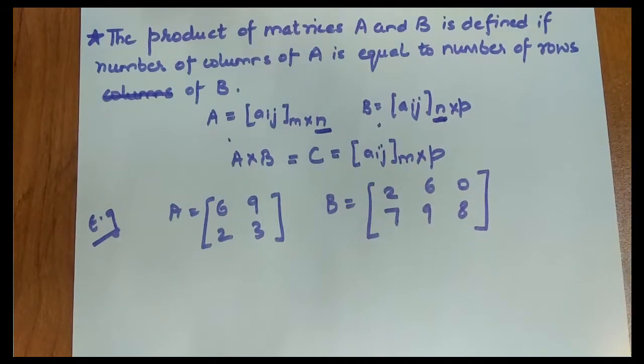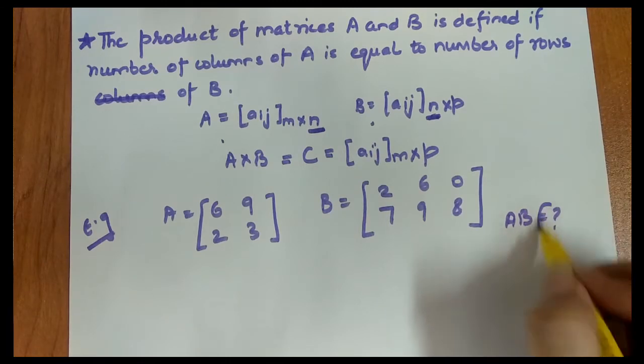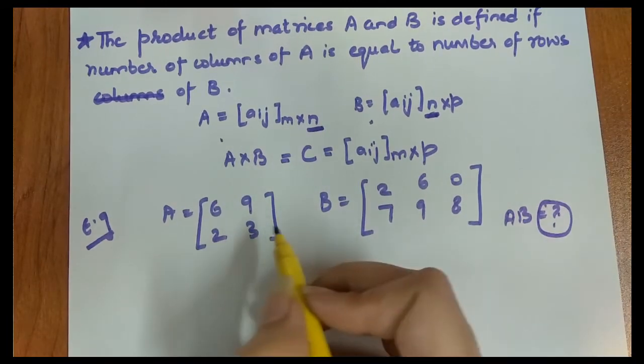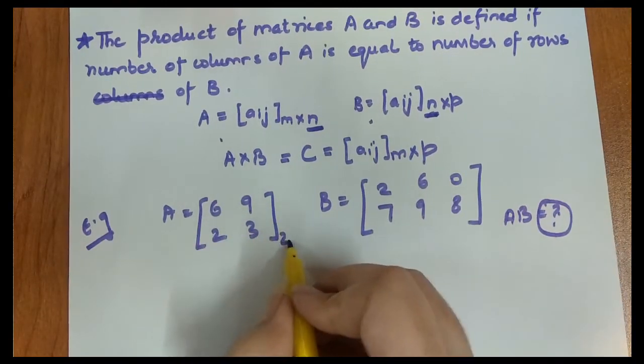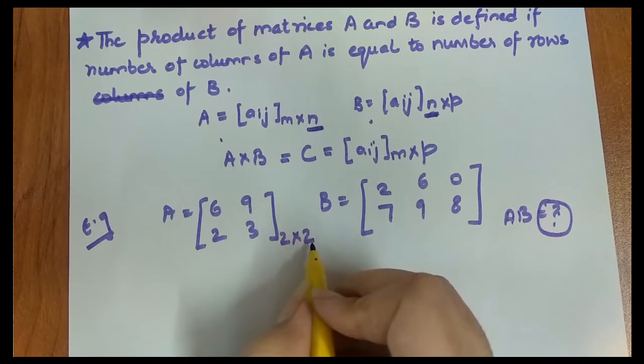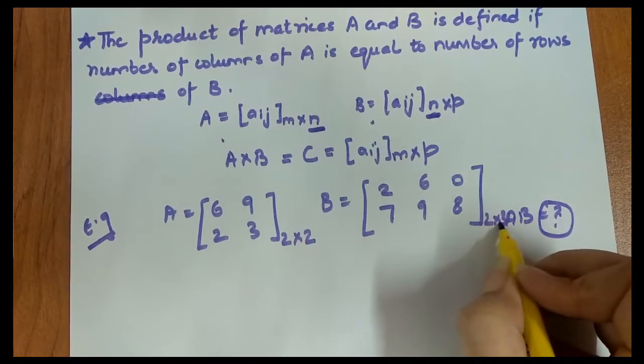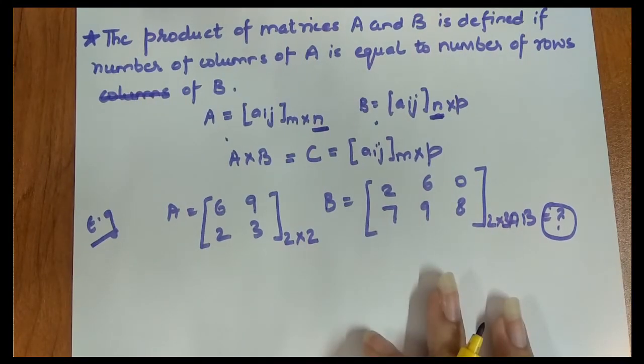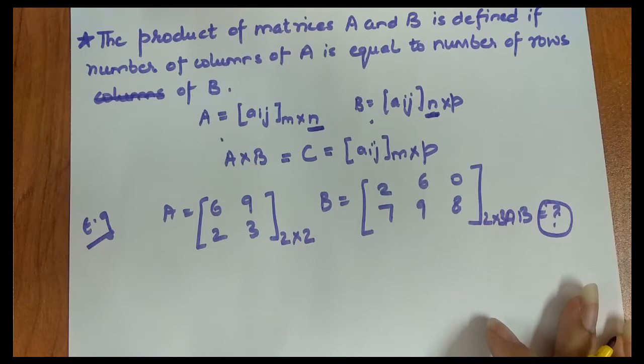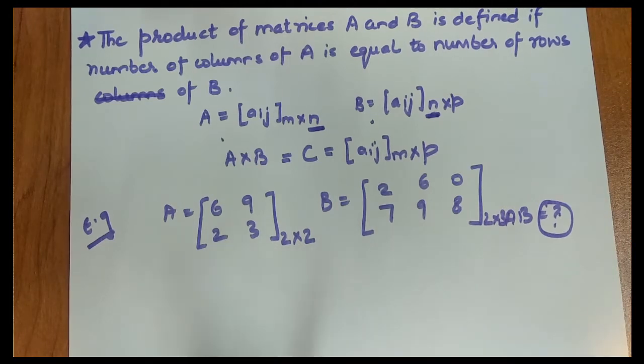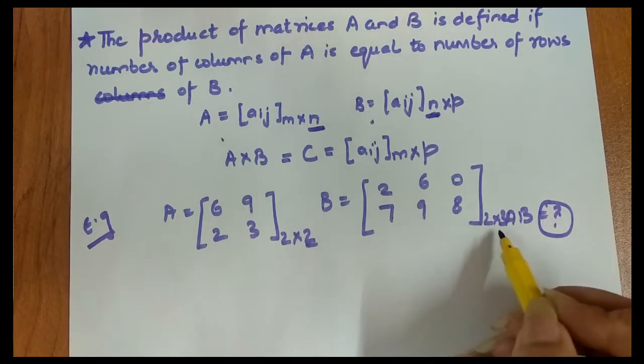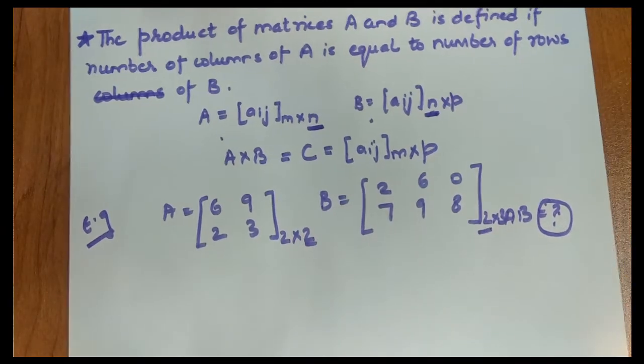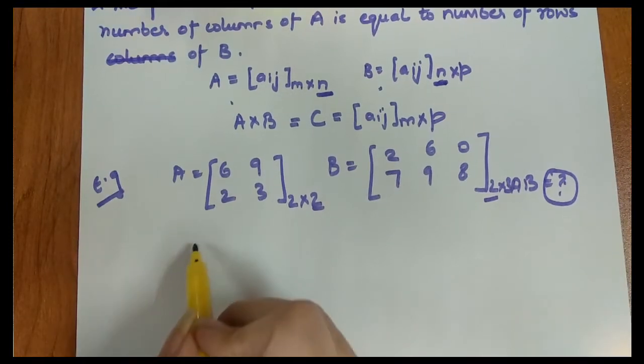If you have some doubt, it will be cleared now. Let's take an example. We need to find AB, which means multiply the matrices. First we calculate the order. This matrix has order 2 rows and 2 columns, so 2 cross 2. This one is 2 cross 3. As per the definition, is matrix multiplication possible or not? Number of columns of the first matrix should equal the number of rows of the second matrix. They are equal, so it's possible.